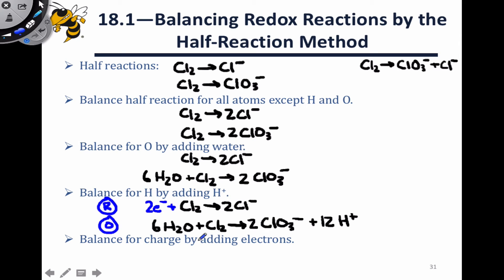In the reaction below, the reactant side is neutral. The product side has an overall charge of plus 10, since we have two negative charges and 12 positive charges. So we need to add 10 electrons to the product side so that that product side comes out to neutral as well.